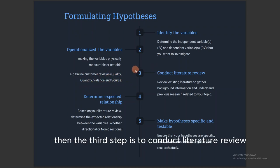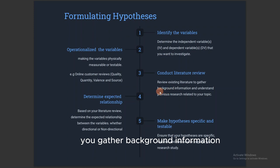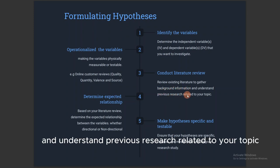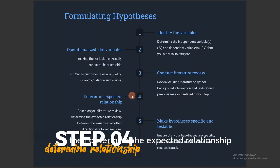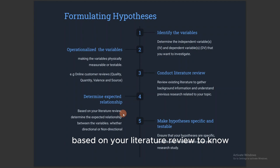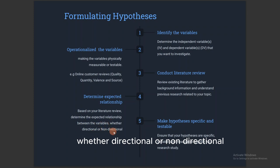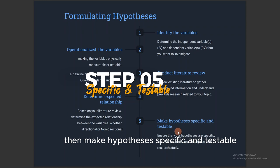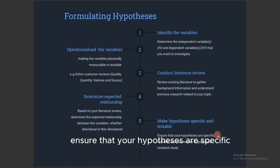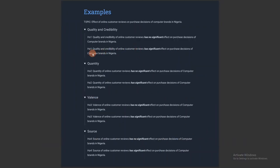Step three: conduct a literature review. By reviewing existing literature, you gather background information and understand previous research related to your topic. Step four: determine the expected relationship based on your literature review — to know whether the relationship between variables is directional or non-directional. Step five: make the hypotheses specific and testable, ensuring that your hypotheses are specific, testable, and measurable to guide your research study.